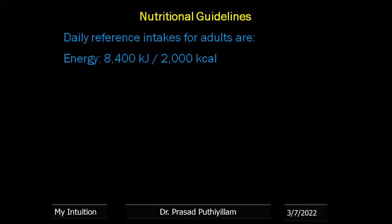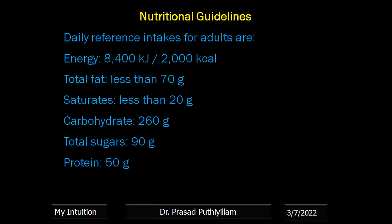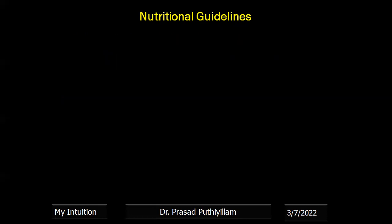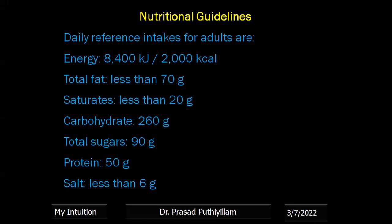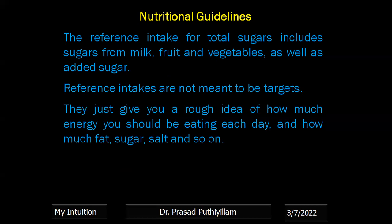Now, the nutritional guidelines for good health and well-being — daily reference intake. This is just a reference, not exactly what you have to monitor. Approximately: energy 8400 kilojoules or 2000 kilocalories; total fat no less than 70 grams; saturates no less than 20 grams; carbohydrate no less than 260 grams; total sugar 90 grams; protein 50 grams; and salt less than 6 grams. Total sugar includes milk, fruits, vegetables as well as added sugar. Reference intakes are not meant to be a target; they give us a rough idea of how much energy, fat, sugar and salt we should be eating each day.